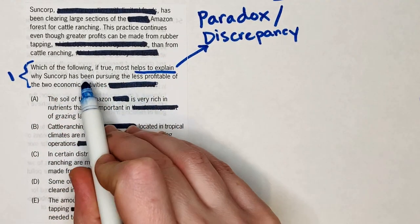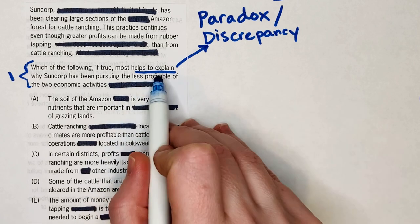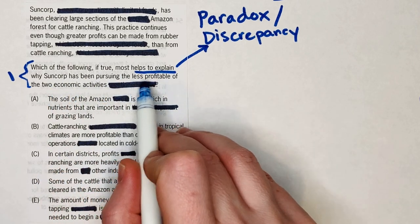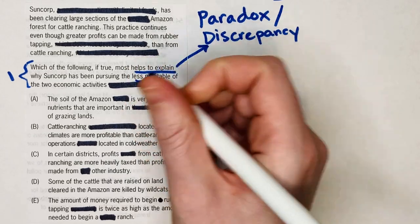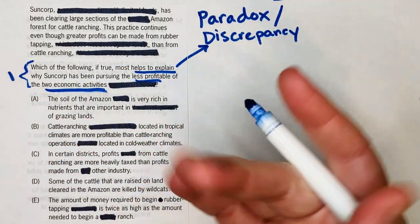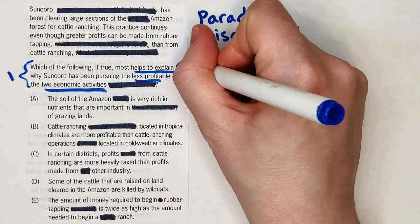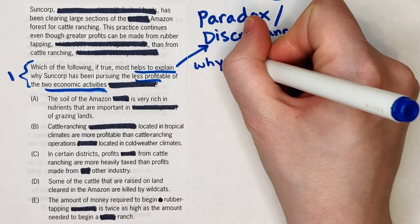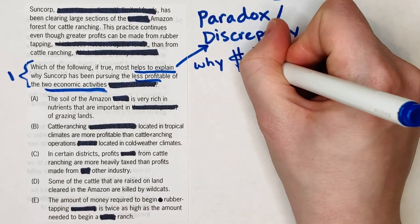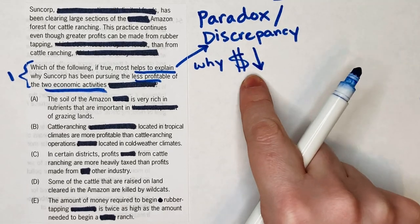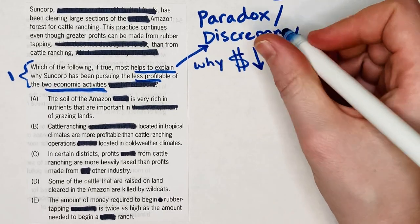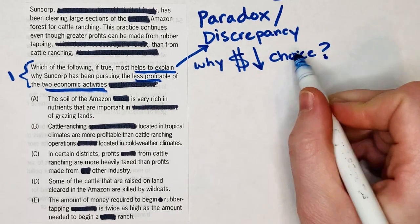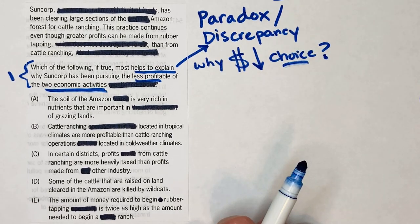Here in the question stem, we don't understand why Suncorp has been pursuing the less profitable of two activities. To rephrase: why are they doing something that's going to bring in less profit when they have a choice? That seems very odd.